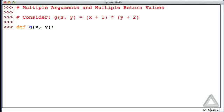The body of this function we can get away with a single return statement. So let's return the quantity x plus one times the quantity y plus two. Hitting return twice we get the interactive prompt back. Let's see if this worked. Let's invoke the function with actual arguments zero and one. When we hit return we get the return value of three.